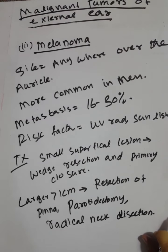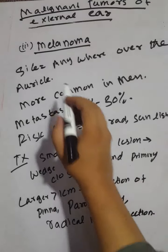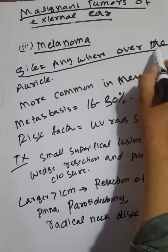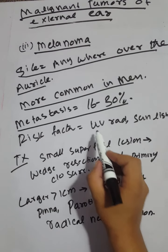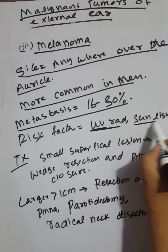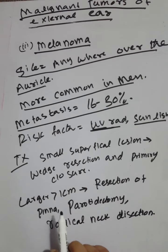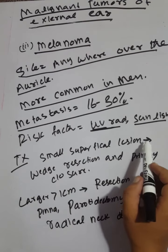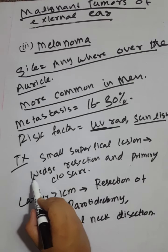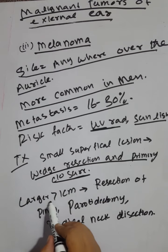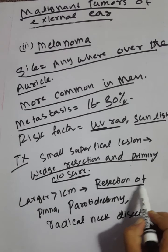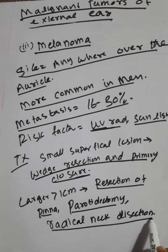The third malignant tumor of the external ear is melanoma. Melanoma is among the most common cancers of the skin and can also occur in the external ear. It can occur anywhere over the auricle and is more common in men. Metastasis occurs in 16 to 30% of cases. Risk factors include ultraviolet radiation and sunlight exposure. Treatment depends on the size of the lesion. Small superficial lesions of 1 cm or less are treated with wide local resection and primary closure. For larger lesions greater than 1 cm, resection of the pinna, parotidectomy, and radical neck dissection are performed. Thank you.